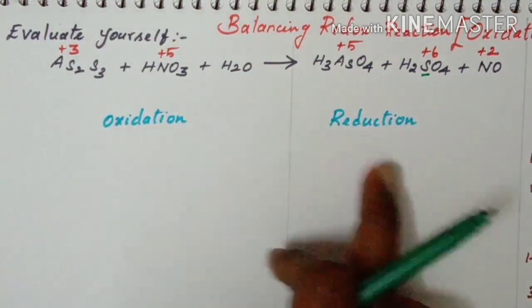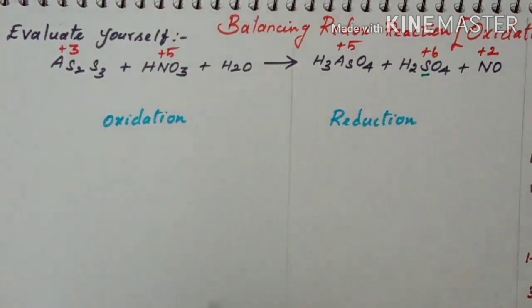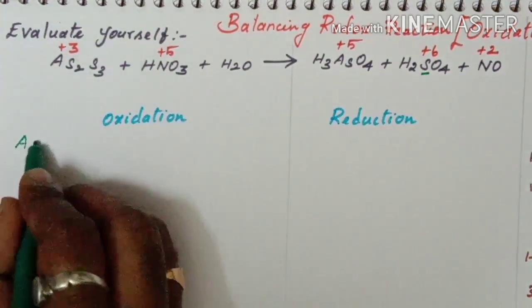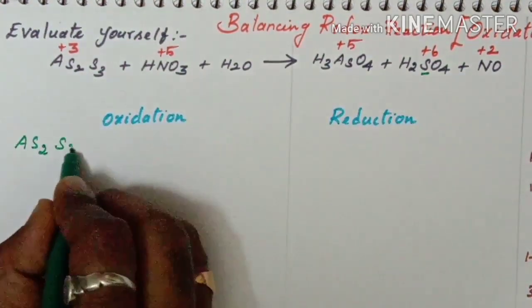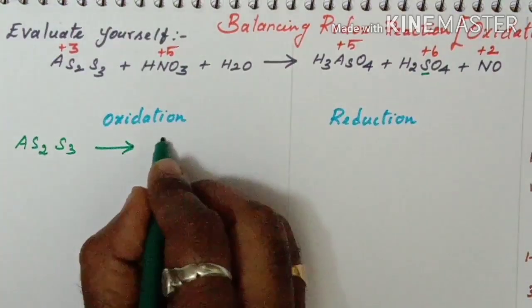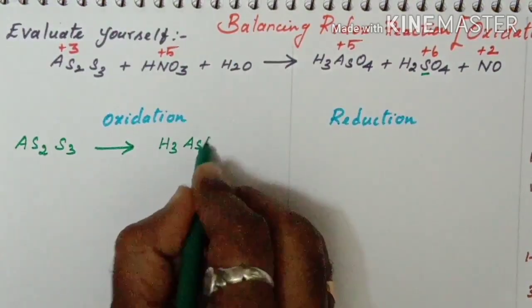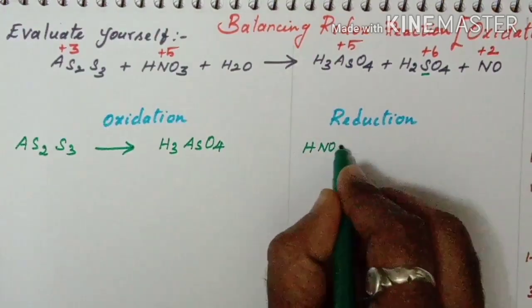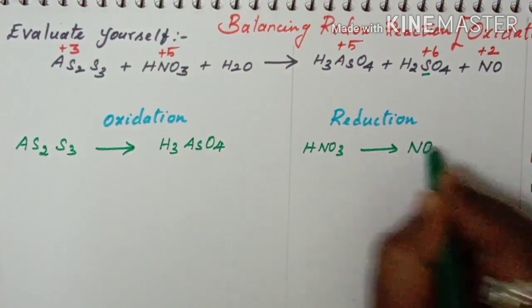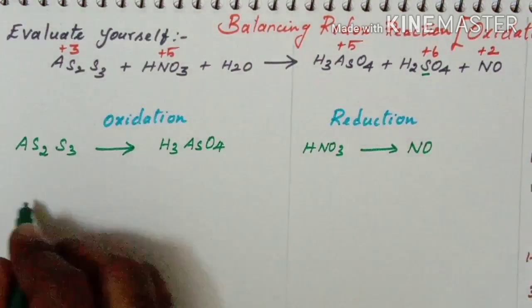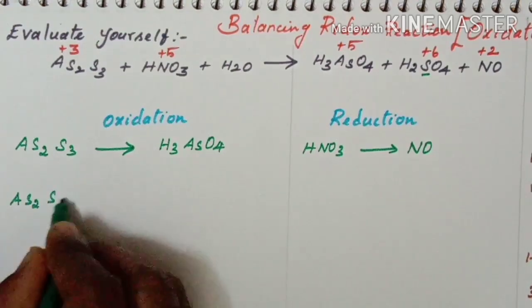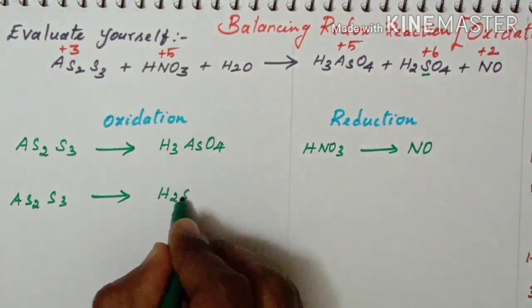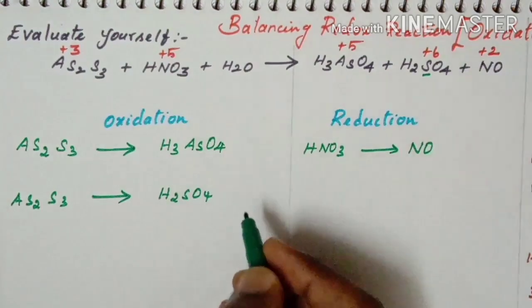Based on the oxidation numbers, we need to identify oxidation and reduction. AS2S3 gives H3AsO4, HNO3 gives NO, and AS2S3 gives H2SO4.